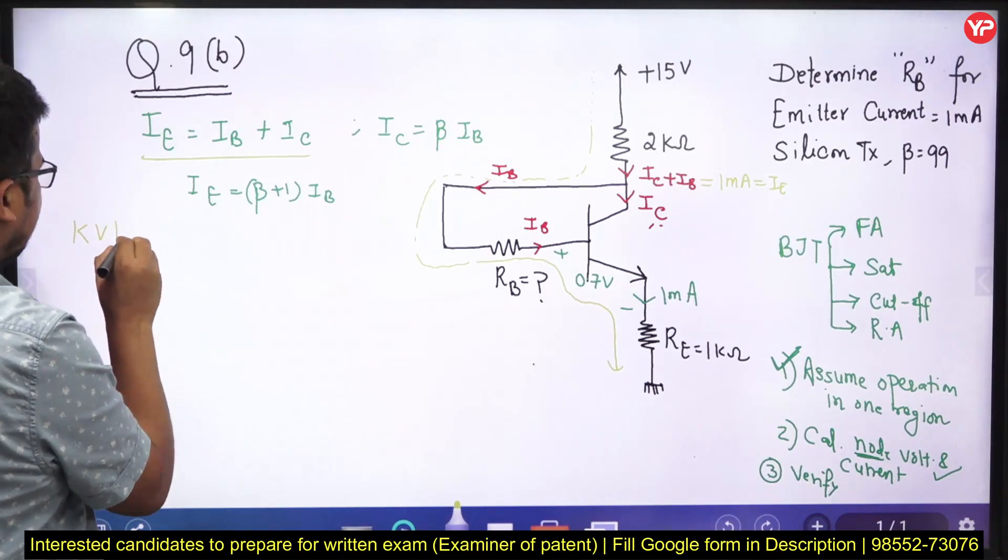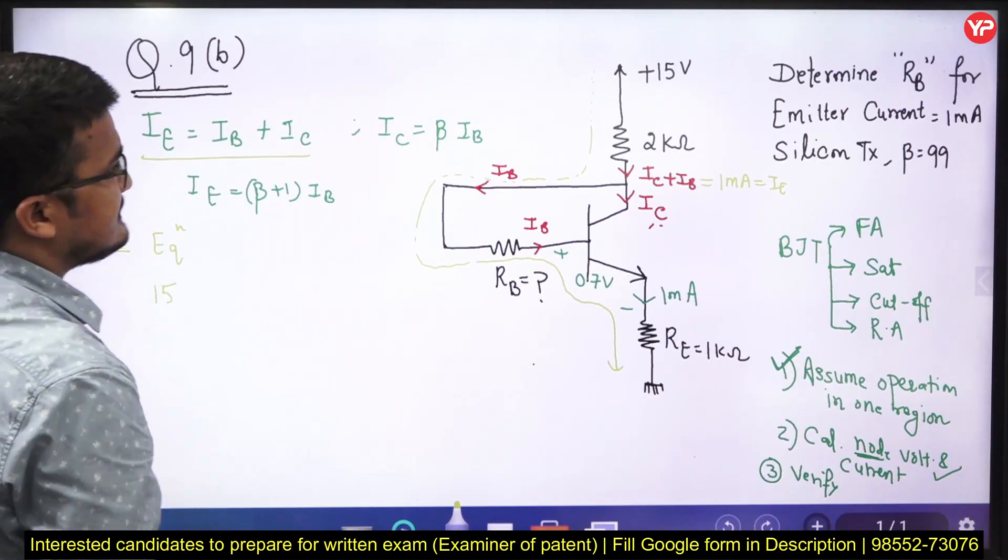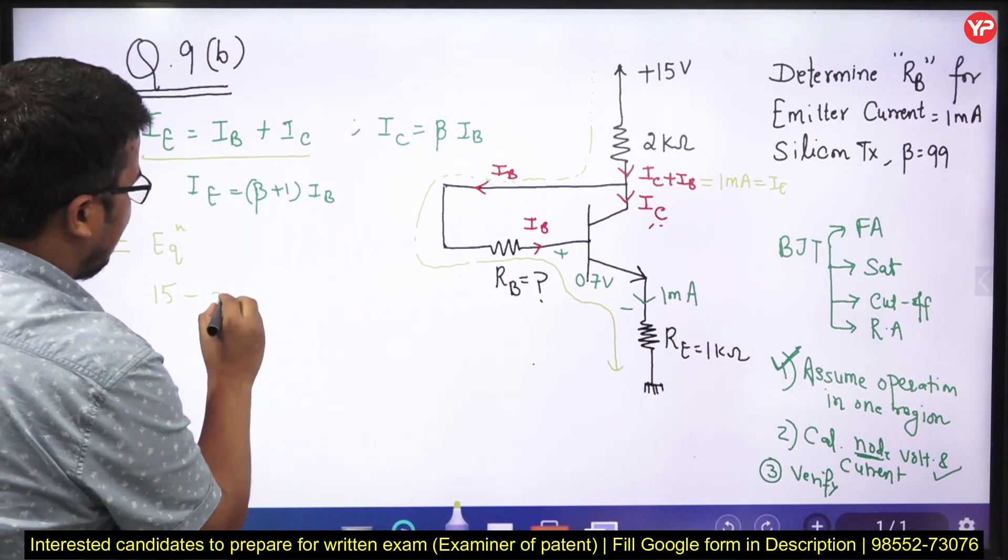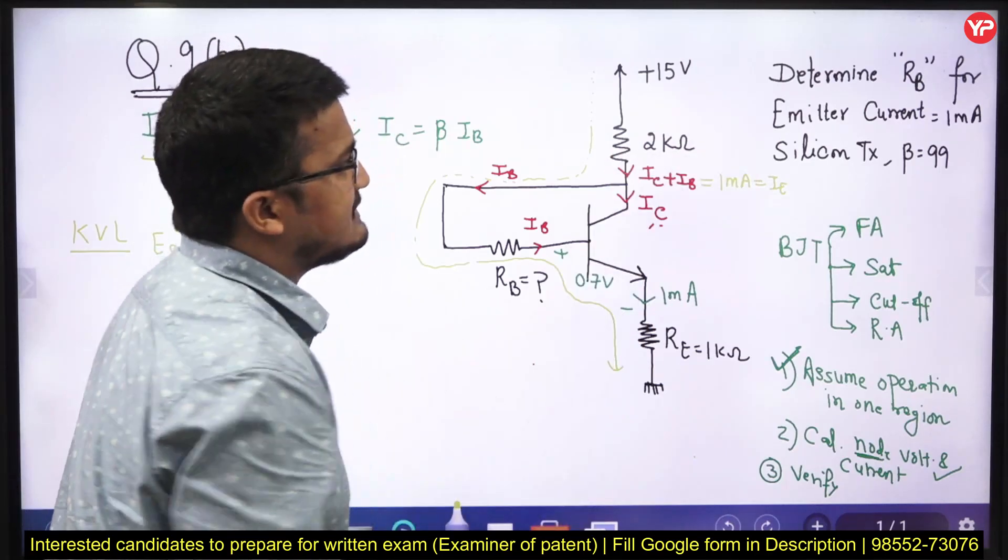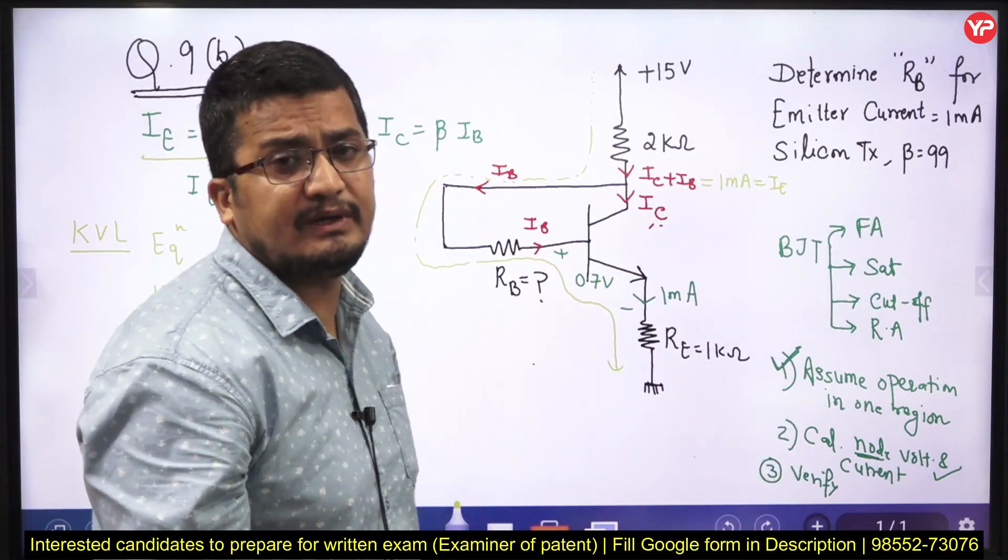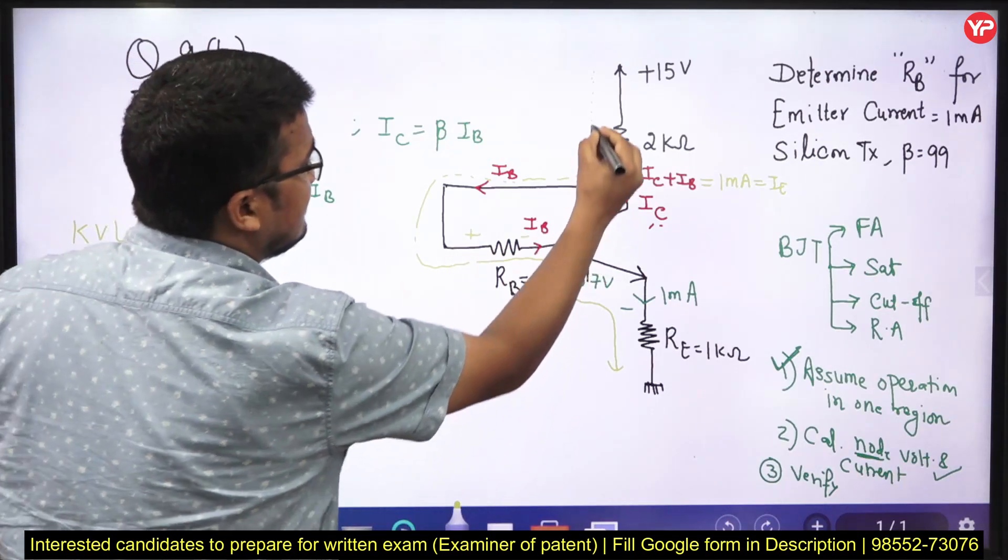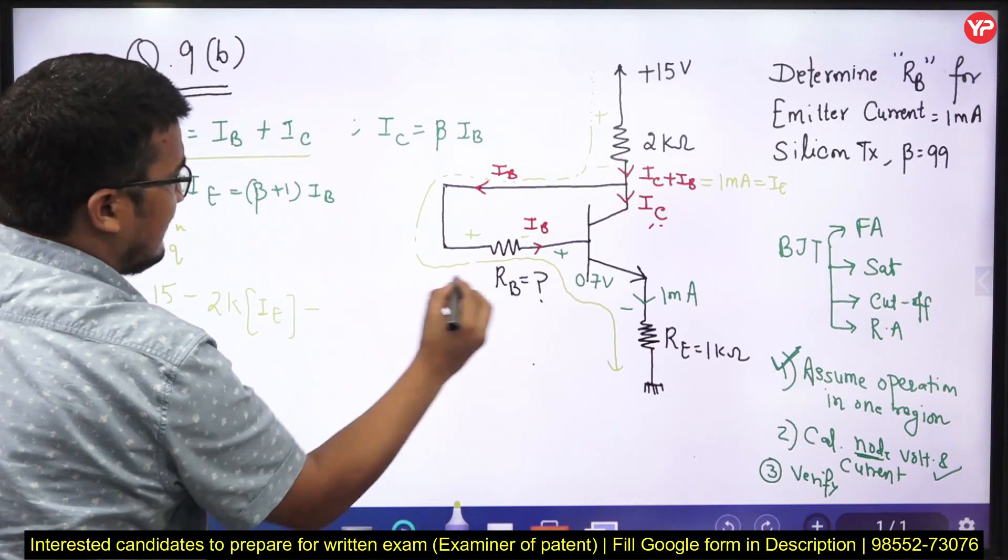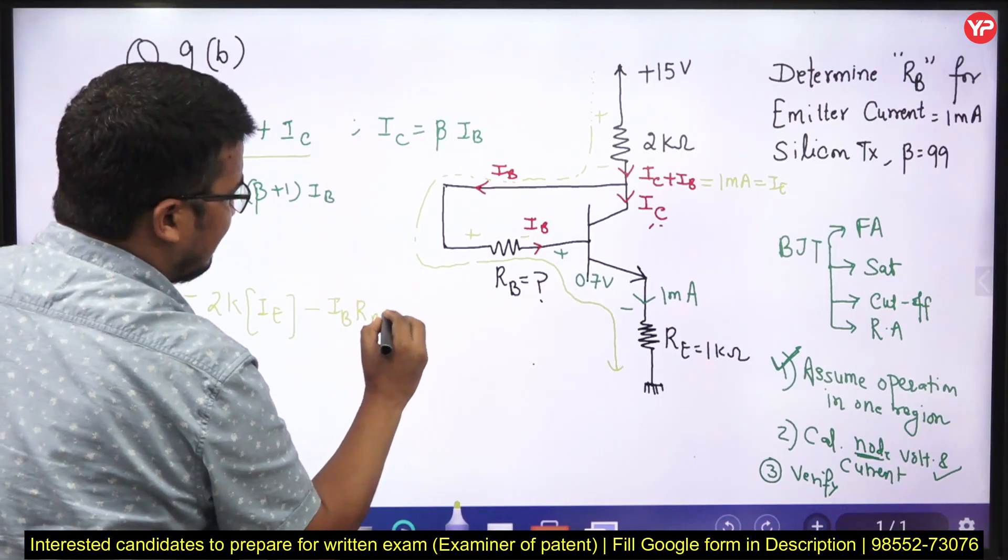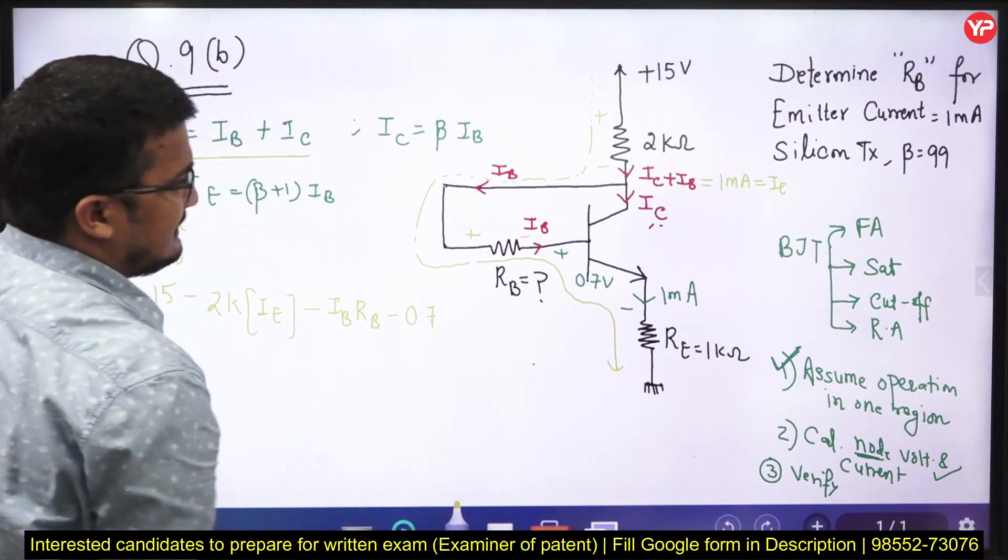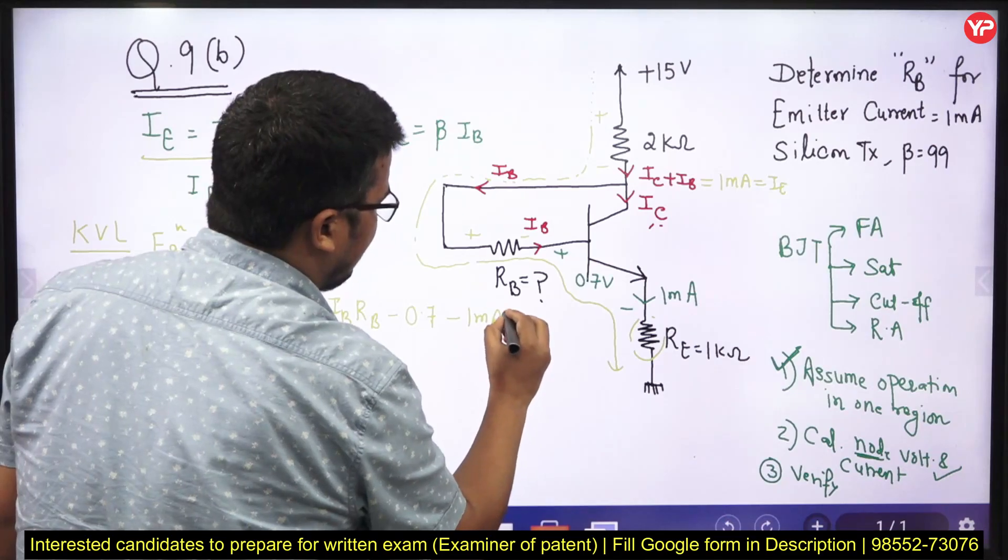The KVL equation will be, please check the calculation, 15 minus twice of K, I can write inside it IE. Some students will try to approximate IE is equal to IC because beta is very high. That is the approximated answer. Better go for the exact analysis. Minus drop across this, plus minus. This was the drop across this. And it will be IB multiplied by RB. And minus 0.7, the ON voltage of the transistor. And drop across this, I can write it minus 1 milliampere into 1 kilo ohm.